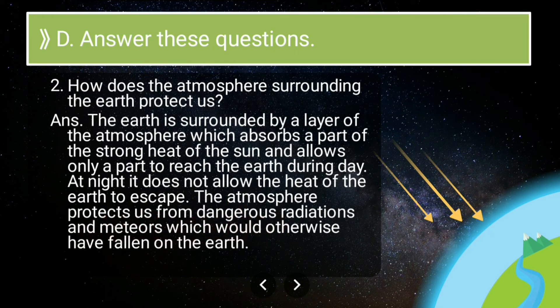The atmosphere also protects us from dangerous radiation, as the Sun emits many harmful radiations that could damage living beings. We should be thankful to the atmosphere because it absorbs most of these harmful radiations. Additionally, the atmosphere protects us from meteors that would otherwise have fallen on Earth. So the atmosphere protects us from strong radiations, prevents heat from escaping, and shields us from meteors.